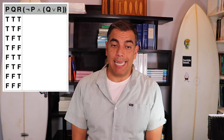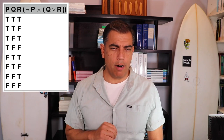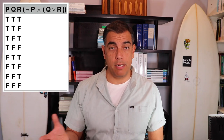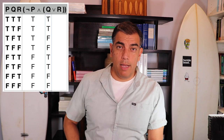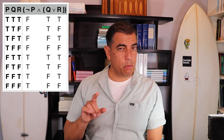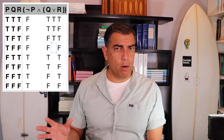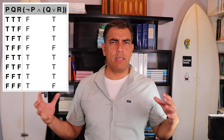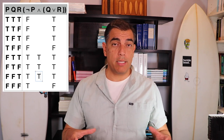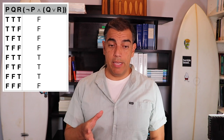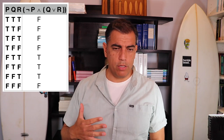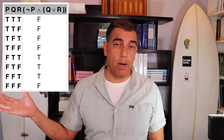Number two: both the case that not P, and also the case that either Q or R. These two parts aren't really related, so this is probably going to be just a contingent proposition. We fill out the simple propositions, negate P by flipping T's and F's, build the disjunction — true when either disjunct is true, false when both are false — then the conjunction, which is only true when both conjuncts are true. It's true when P is false and Q is true, or P is false and R is true, or P is false and both Q and R are true. Otherwise it's false.